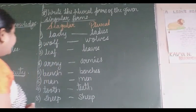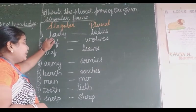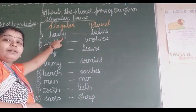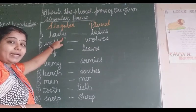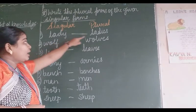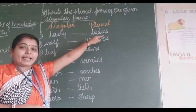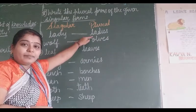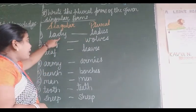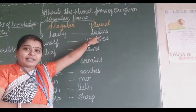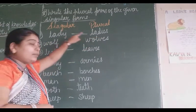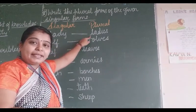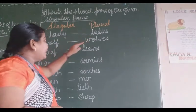So here the singular word is 'lady' — L-A-D-Y. Since Y is there, we will write the plural as I-E-S. So 'lady' becomes 'ladies'. The word ending in Y gets changed into I-E-S. So L-A-D-Y, ladies.